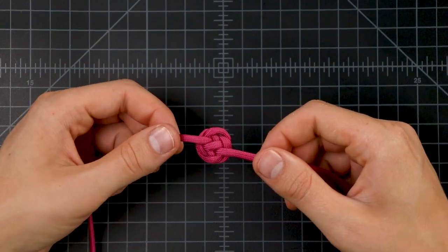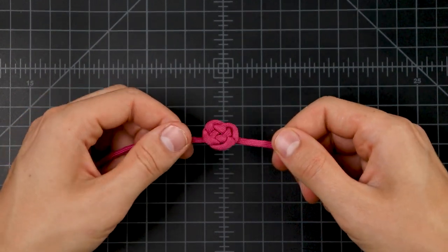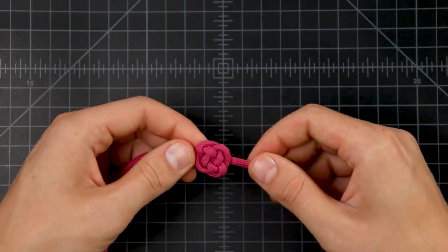Okay, so we've actually been looking at the bottom of this knot the whole time, but if we turn it right side up, we've got this nice flower pattern.